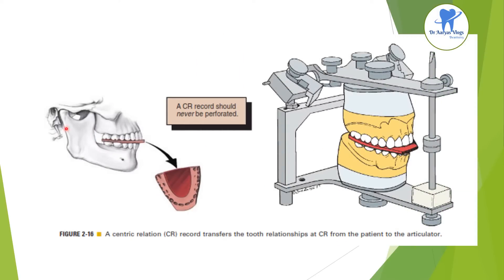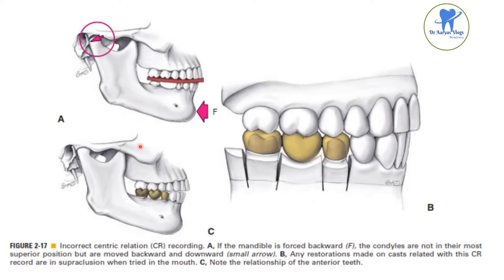This picture shows the centric relation record, which transfers the tooth relationships at centric relation from the patient to the articulator. It is noted that the centric relation record should never be perforated. This picture shows the incorrect centric relation recording — here the mandible is forced backward, so the condyles are not in their more superior position but are moved backward and downward.